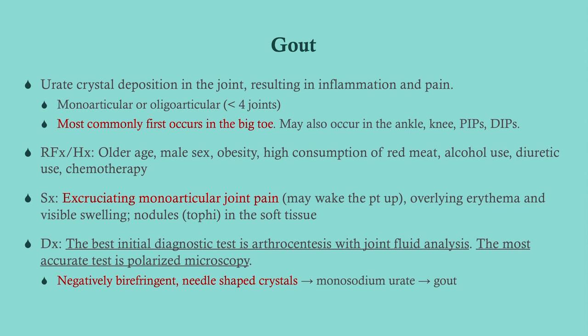Regular gout is urate crystal deposition in the joint, resulting in inflammation and pain. It tends to be monoarticular — it can affect more than one joint, but typically affects one joint at a time. Most commonly it first occurs in the big toe; next I'd look at the knee, but it can affect any joint including the fingers.